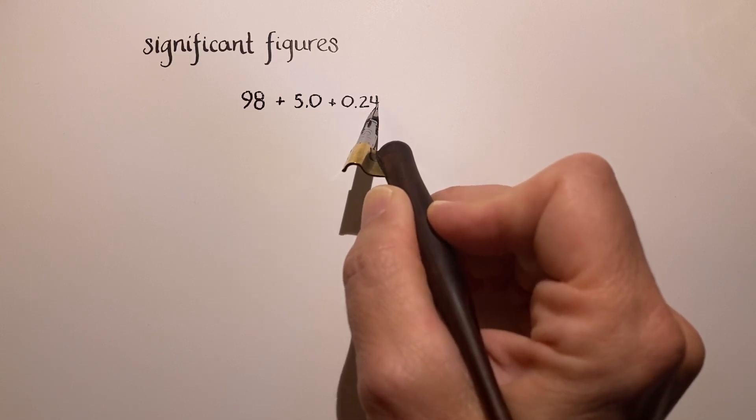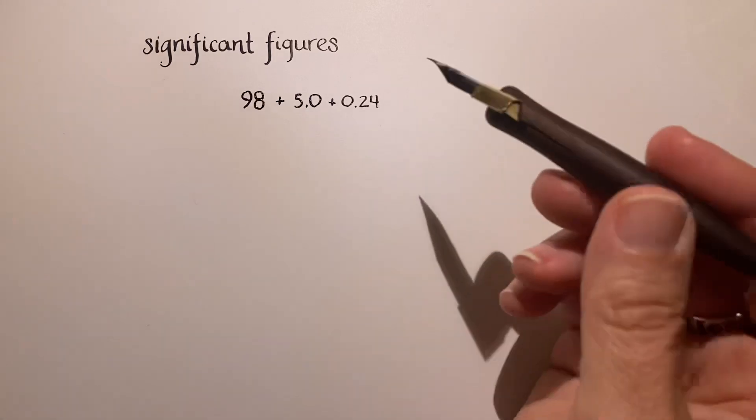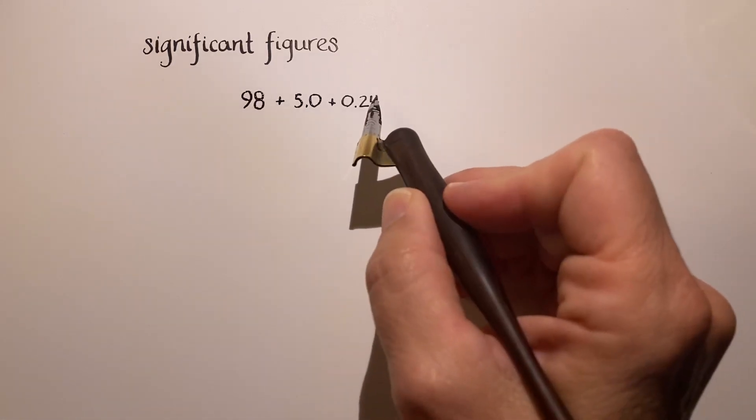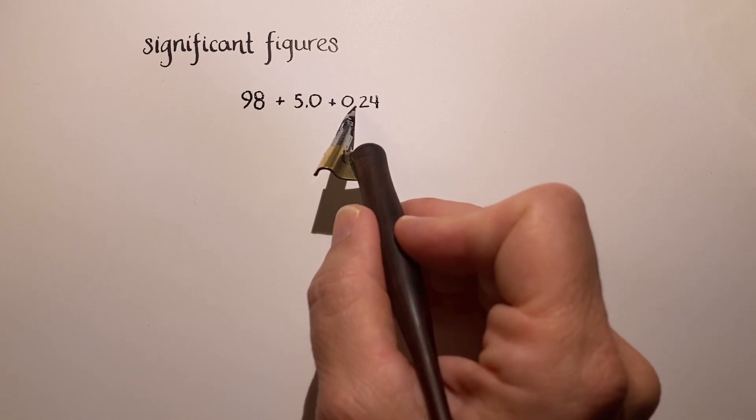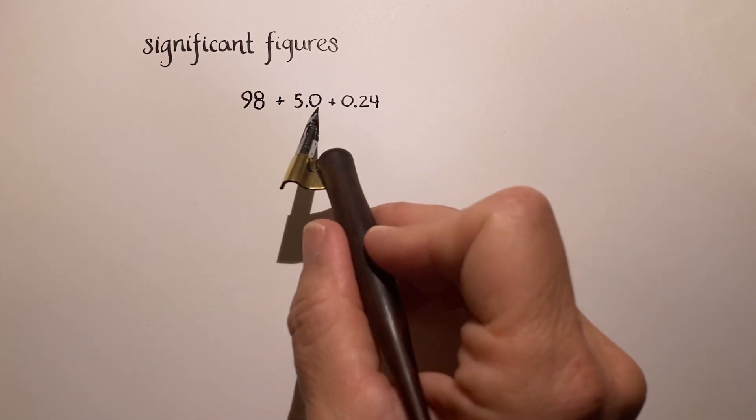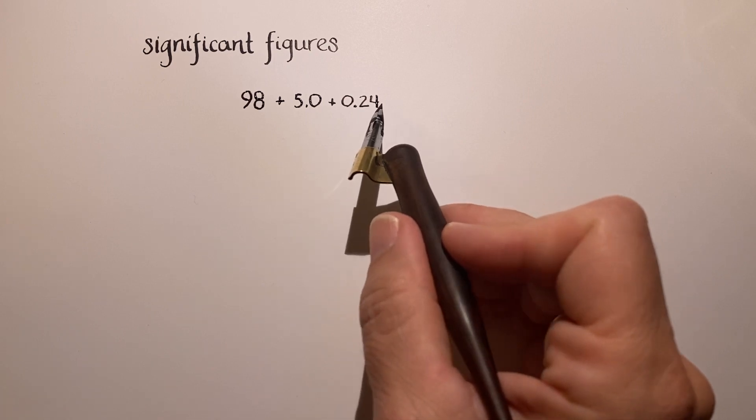So I wanted you to take a look at each of these while I dip my pen in the ink and think about how many significant figures each one of these values has. And if you were thinking two, two, and two, you were correct.